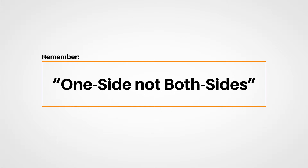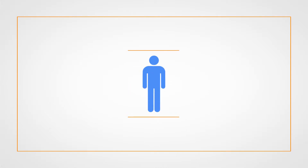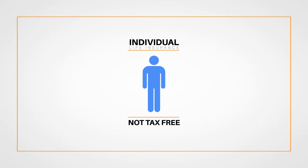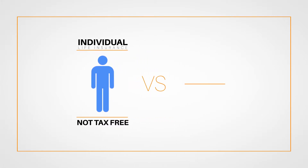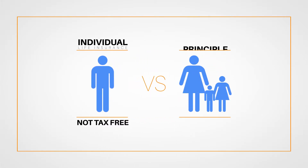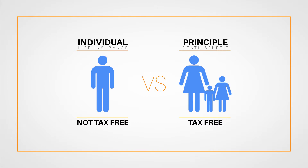There are a couple of things that will help you recall the information on the test if you get stuck on a question. When thinking about taxes in general, remember the concept of one side, not both sides, in the tax equation. For instance, premiums paid for individual life insurance policies are not tax deductible — that's one side of the equation. And on the other side, the principal death benefit is received tax-free by the beneficiary.